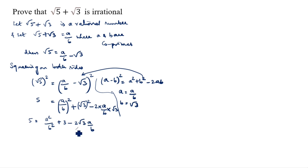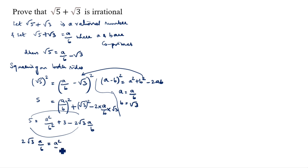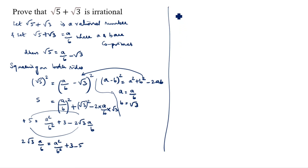Rearranging, move terms to the other side: 2 root 3 times a by b equals a square by b square plus 3 minus 5, which gives a square by b square plus 3 minus 5 equals a square by b square minus 2.